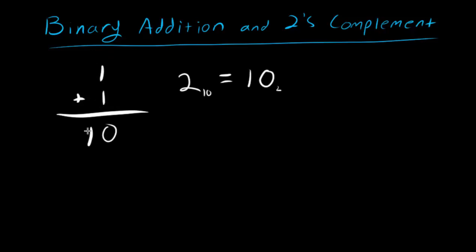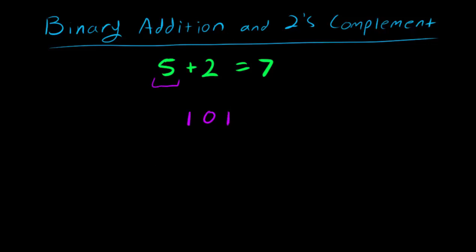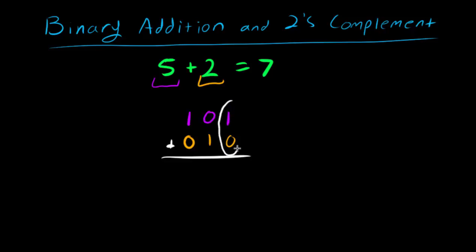If we memorize that 1 plus 1 in binary equals 1 0, we can take this principle and apply it to a larger binary number. Let's do 5 plus 2, which should equal 7 in base 10. How do we represent 5 in binary? That's just 1 0 1. And we are going to add that to 2, which is 0 1 0. We can add these numbers column by column starting at the far right, at the least significant digit.